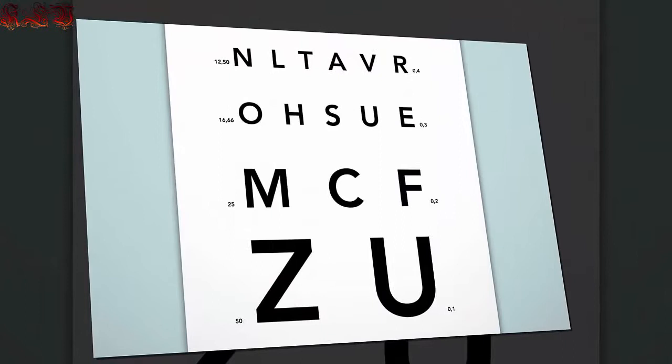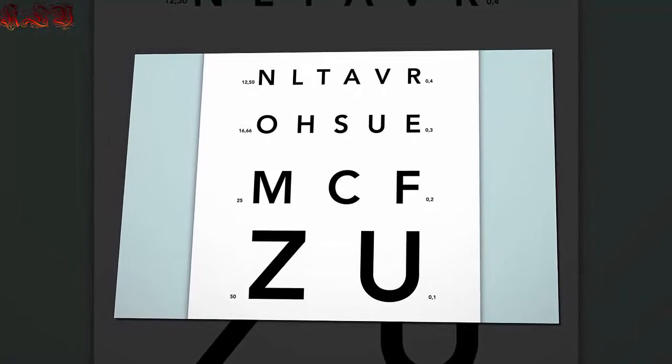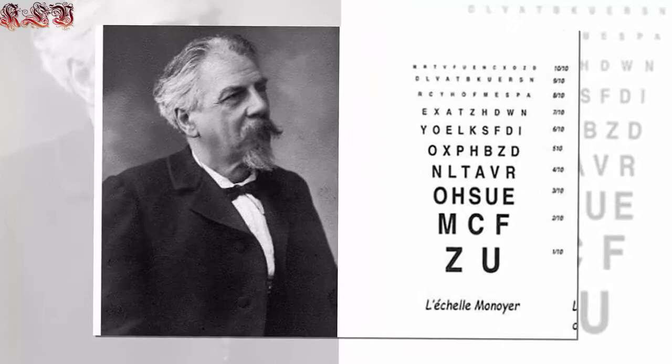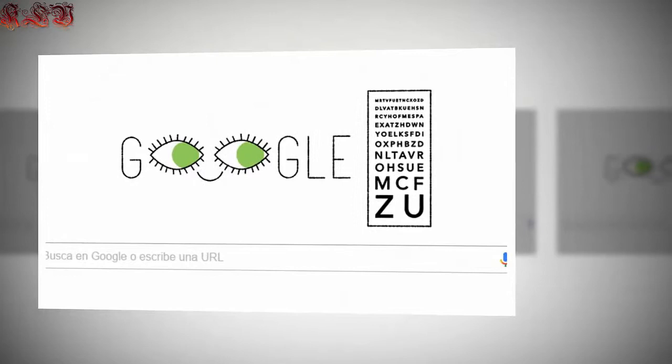The ophthalmologist created the first decimal eye chart in 1872, which featured rows of letters in different sizes. Each row represented a different diopter, a unit of measurement for vision that Monoyer invented, and that is still in use today. The diopter measures the distance you'd have to be from text to read it, Google explains.